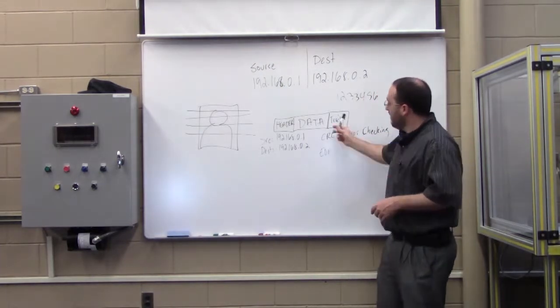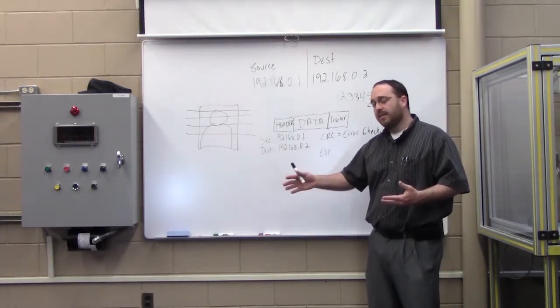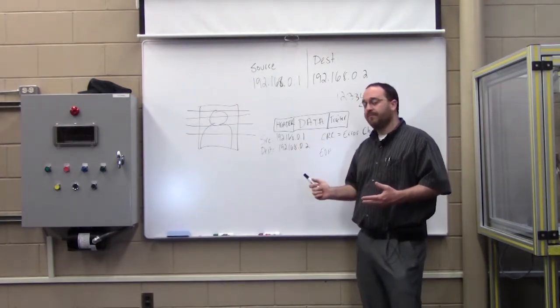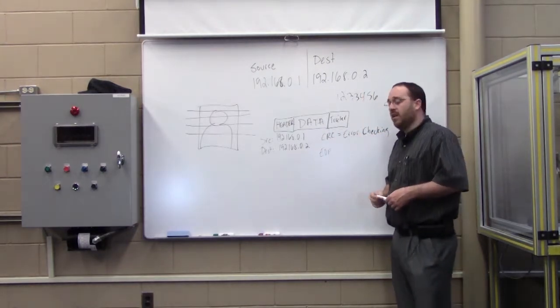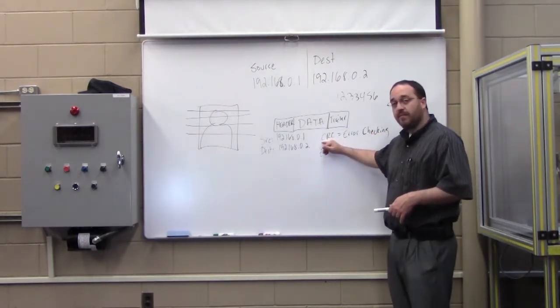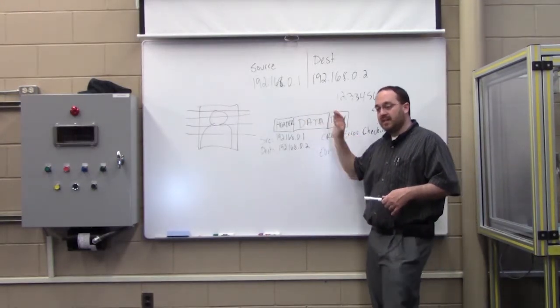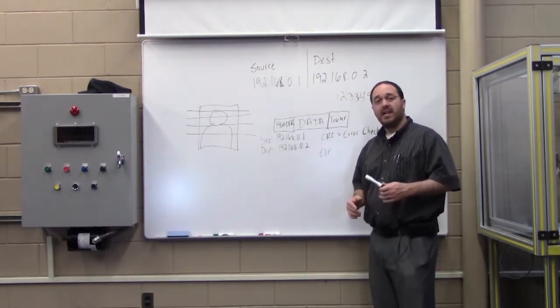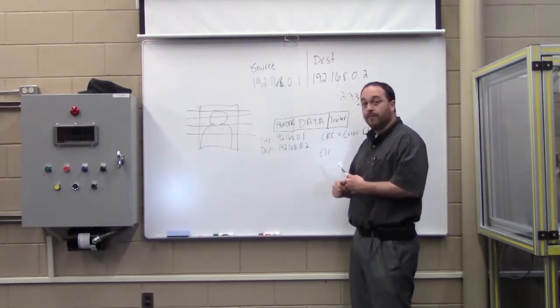Well, when this packet gets to the destination and it's being decapsulated on the other end, the receiving machine will run the same algorithm on that data. And we should expect to get the same answer. If we run the algorithm and we get the same answer that's in the CRC, then we know that this data arrived in the state, in its original state. That it is intact. That we received it as it was meant to be received. It hasn't been tampered with and it has not had any kind of data loss or error in the frame.